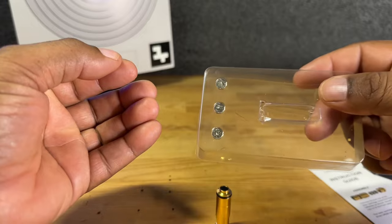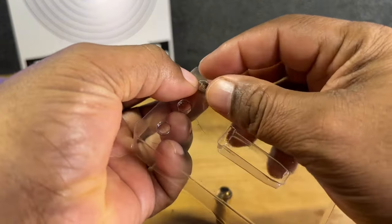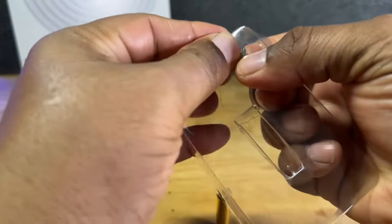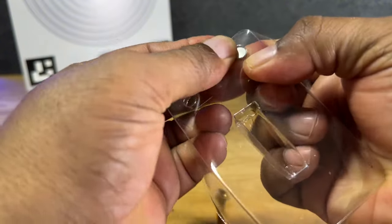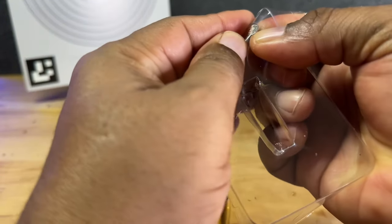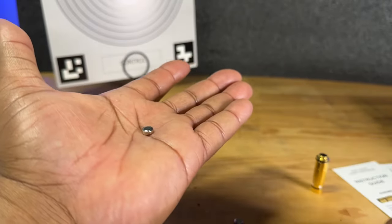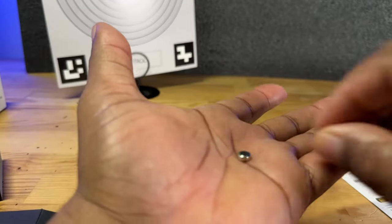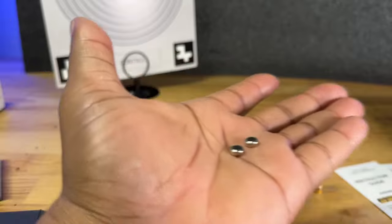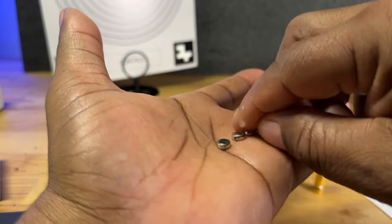Now you're going to get three batteries that come with this. You want to carefully take these out and be careful because these are very small and they can pop out and go flying across the room. As you guys can see here, these are very small. So be careful taking them out of the packaging.